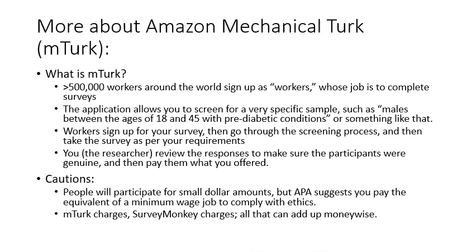A couple of cautions with MTurk: APA mandates and IRBs require that you pay participants the equivalent of at least minimum wage. For example, if your survey takes 30 minutes and minimum wage is $12/hour, you should pay $6. When you add that to MTurk's fees and SurveyMonkey's fees, the costs can add up — what starts out looking cheap may not stay that way.